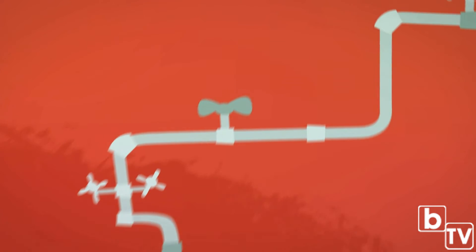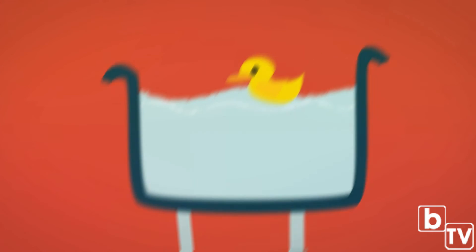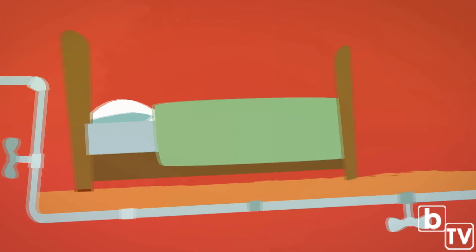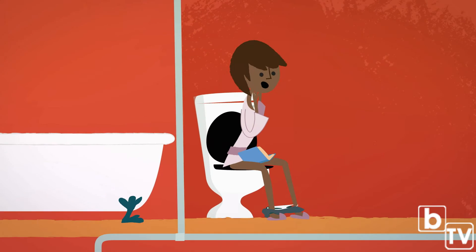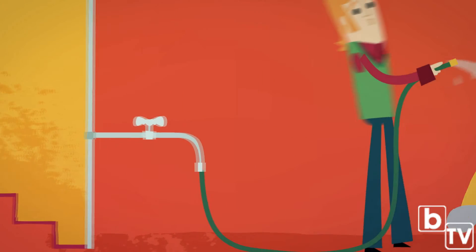Until recent times, most homes relied on storage tanks and gravity to deliver water around the home. This is called a gravity-fed or low-pressure system, and they were the norm right up until the late 1970s.